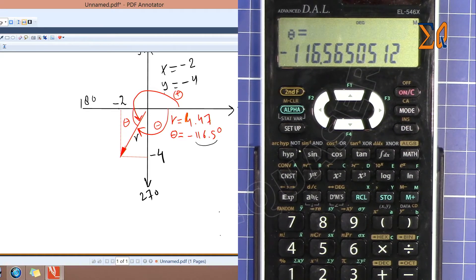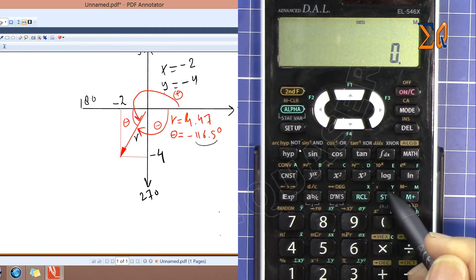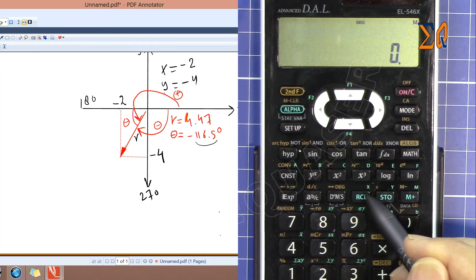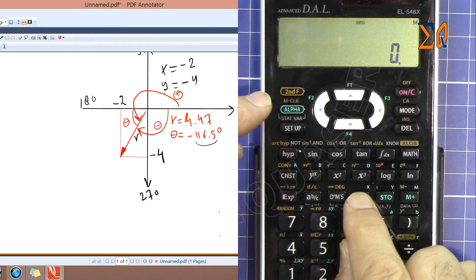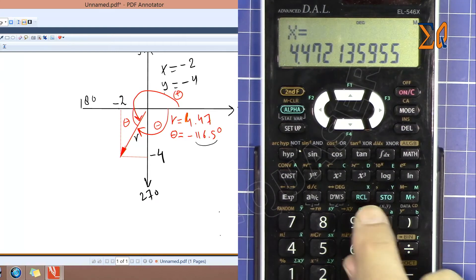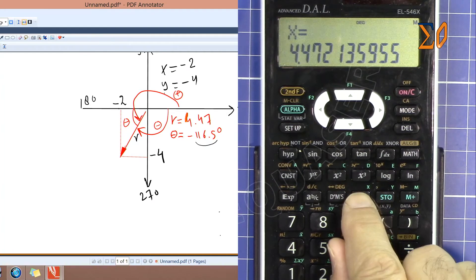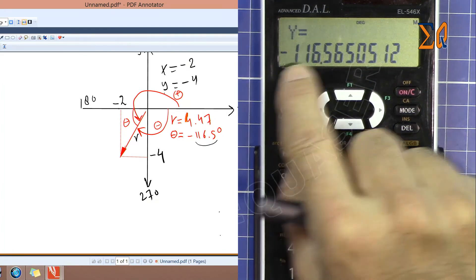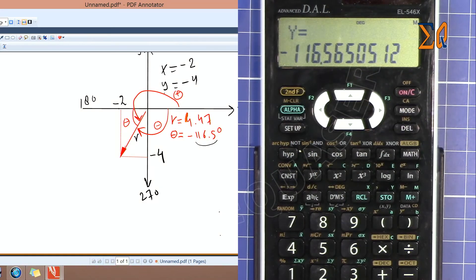Remember all the values for X and Y, for R and theta—the result is always stored in X and Y. If you're converting to polar, R is here. Recall X—you press recall and any of these blue buttons will give you the value—or recall Y. That's minus 116. To make this positive, just multiply it by minus one.